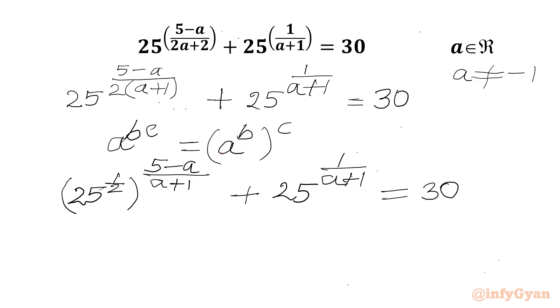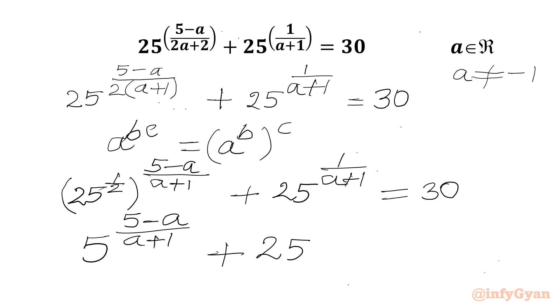Now we know that 25 to the power 1/2 is the square root of 25, so we can write 5 directly. Then we have 5 to the power (5 minus a) over (a plus 1), plus 25 to the power 1 over (a plus 1), equal to 30.